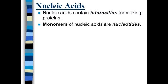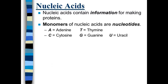The monomers for nucleic acids are what we call nucleotides. You are probably already familiar with nucleotides, although you likely didn't learn that term. You're already familiar with A, T, C, and G. We're going to introduce a new nucleotide this year as we talk about RNA, which is uracil. So those are our five nucleotides: adenine, thymine, cytosine, guanine, and uracil. These are actually the nitrogenous bases that are part of the nucleotides.